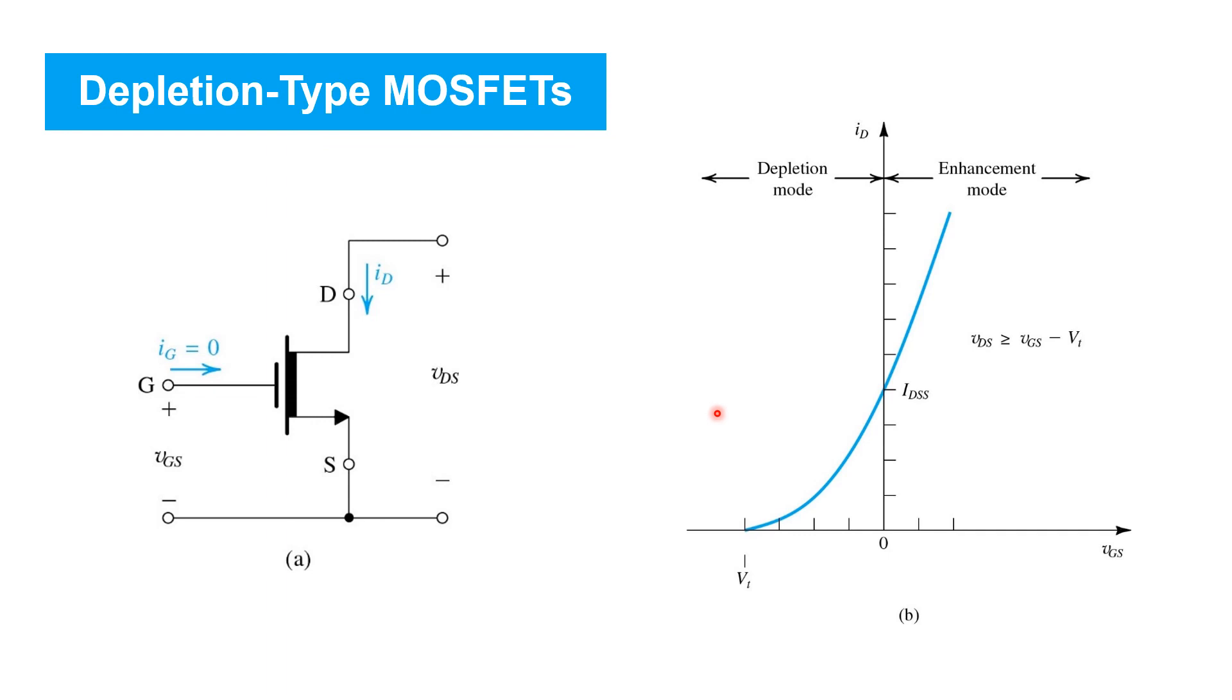Whenever you operate this transistor with a negative gate source voltage, you're depleting the channel, the pre-existing channel. So, it's called operating it in depletion mode. On the other hand, if you increase VGS above zero, you're enhancing the channel that's already there. So, that's called enhancement mode.